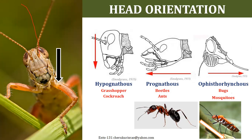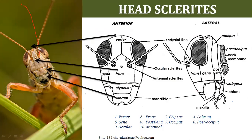To summarize: hypognathous means hypo — directed downward; prognathous means pro — directed forward; opistognathous means directed backwards. These three kinds of orientations are commonly seen in insects.